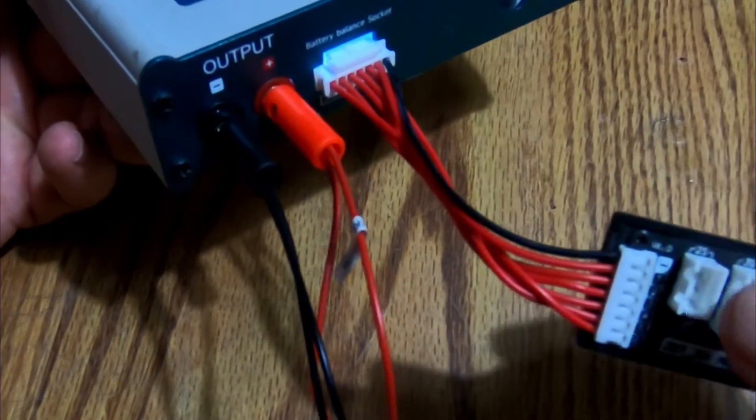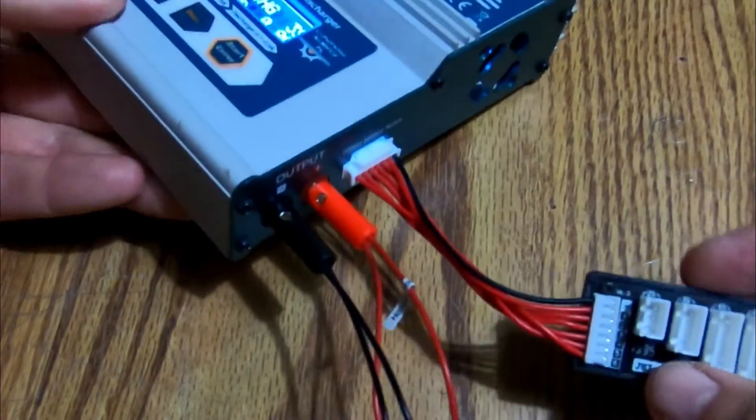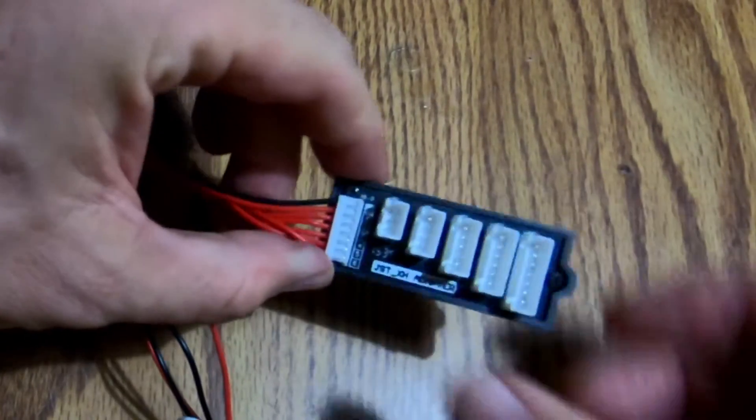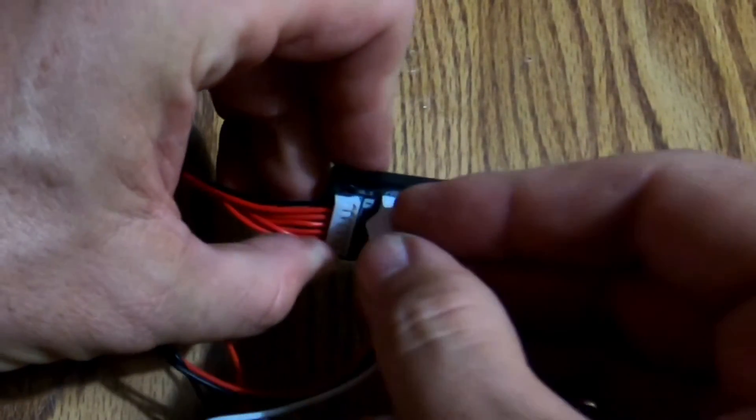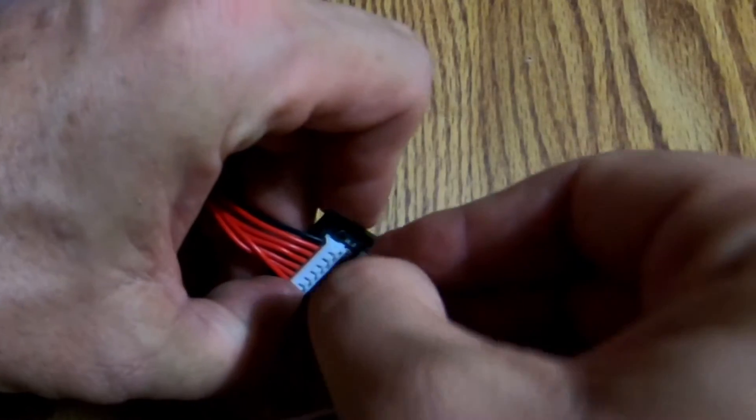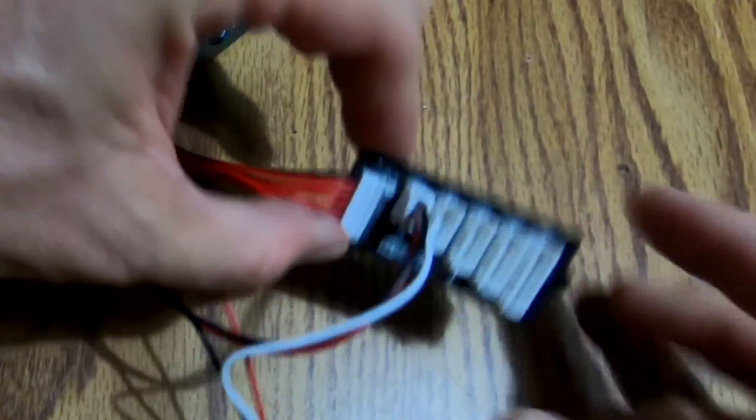So what you're going to do on the balance adapter, and the first one here is for two cell, you're going to plug in the little bind plug here to the two cell side. Like this.